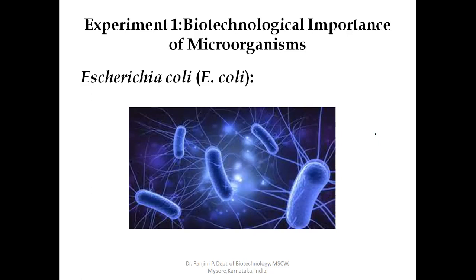E. coli can obtain energy from a wide variety of substrates in its natural environment. For example, in the gut, it consumes digested foodstuffs. In the laboratory, E. coli can be fed very easily and cheaply with inexpensive raw materials.